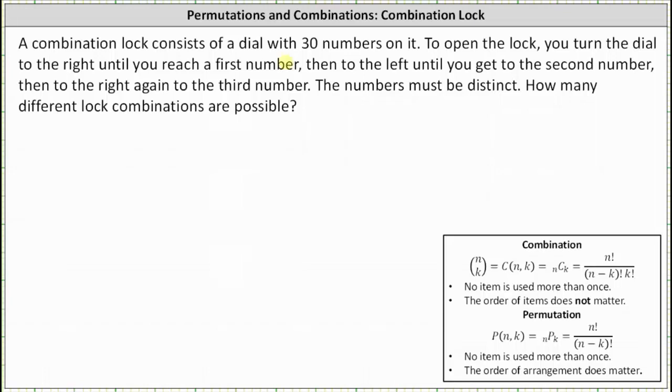A combination lock consists of a dial with 30 numbers on it. To open the lock, you turn the dial to the right until you reach a first number, then to the left until you get to the second number, and then to the right again to the third number. The numbers must be distinct, meaning the three numbers must be different. How many different lock combinations are possible?